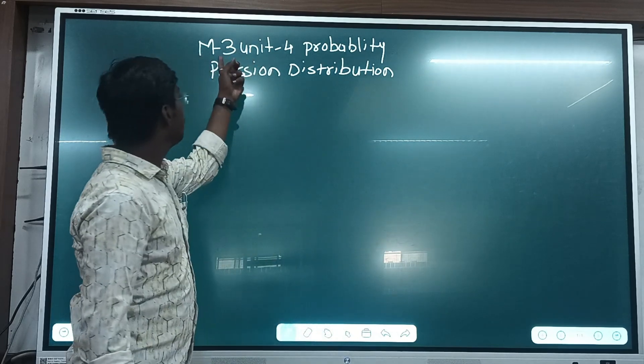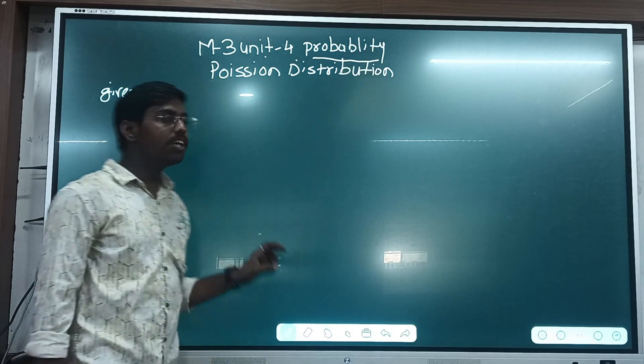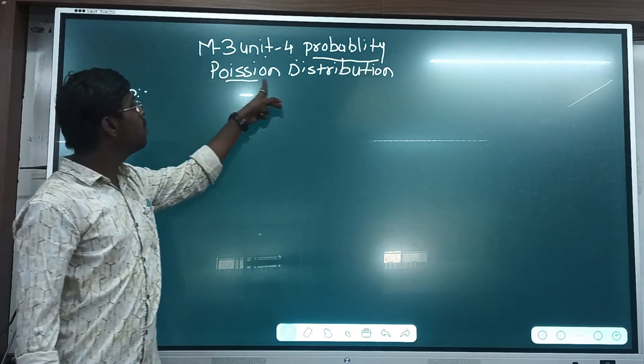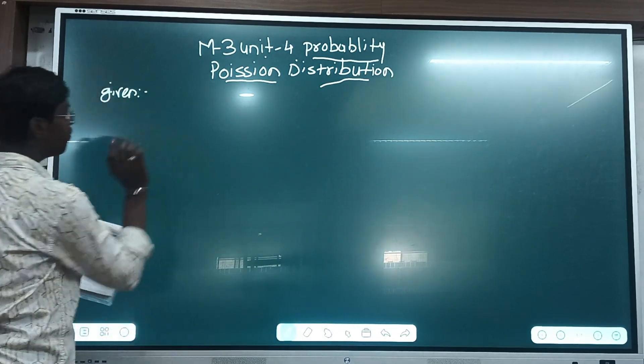Welcome everyone. Today is M3 unit number 4, that is probability. In this unit, we are studying about the Poisson's distribution. This is the most important point for the M3 unit number 4.